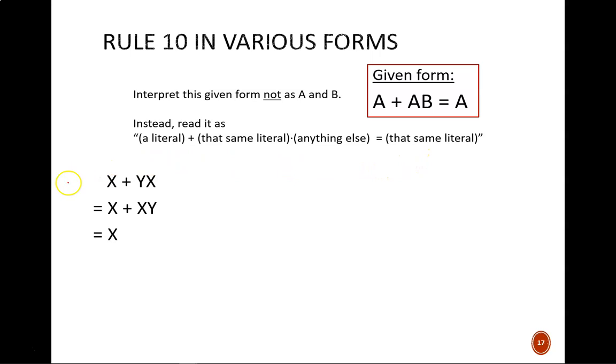First, a simple one. Through the commutative law, this Y and X can be reorganized to X and Y. Then, we see that this expression has the exact same structure as the standard rule 10 expression. Just now, A is named X and B is named Y. So, following that pattern, we are left with just X.